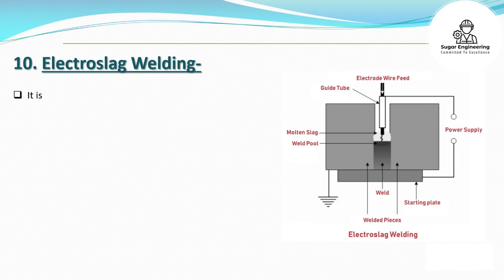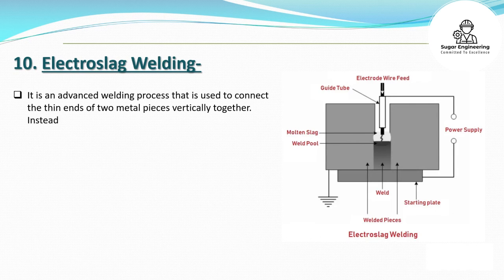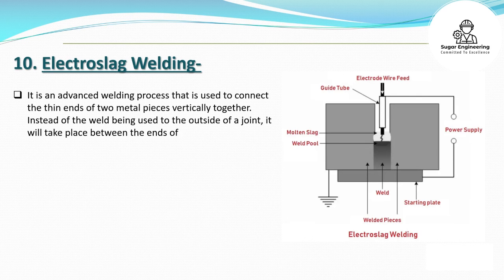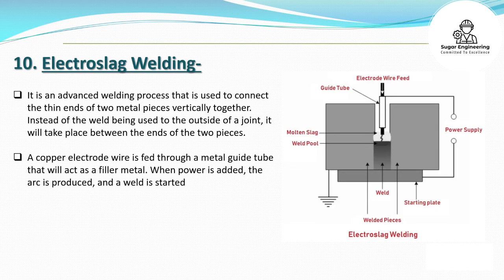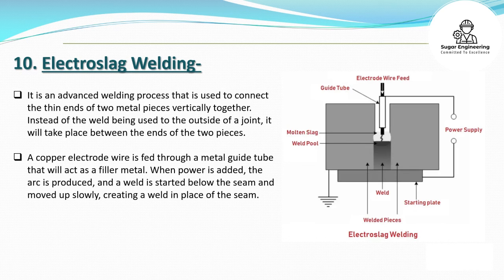10. Electro-Slack Welding. It is an advanced welding process used to connect the thin ends of two metal pieces vertically together. Instead of the weld being applied to the outside of a joint, it takes place between the ends of the two pieces. A copper electrode wire is fed through a metal guide tube that acts as a filler metal. When power is added, the arc is produced and a weld is started below the seam and moved up slowly, creating a weld in place of the seam.